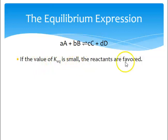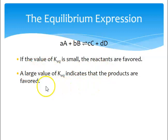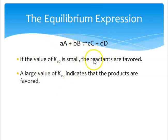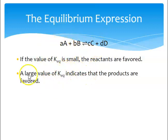If K_eq is small, it means the reactants are favored. If K_eq is large, that means you have product-favored — remember, it's just a ratio, products over reactants. If K_eq is small, you have lots of reactant and not a lot of product, so it's reactant-favored. A large value of K_eq means you have lots of products and not a lot of reactant. We say that the equilibrium lies to the right or to the left: small K_eq, it lies to the left; large K_eq, it lies to the right.